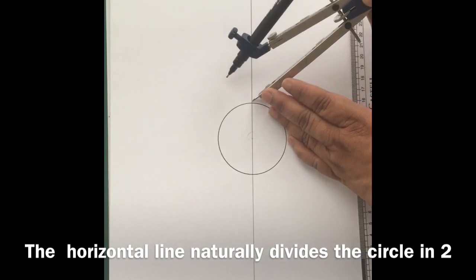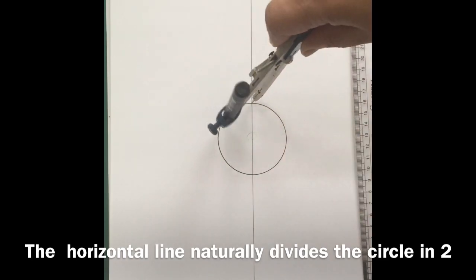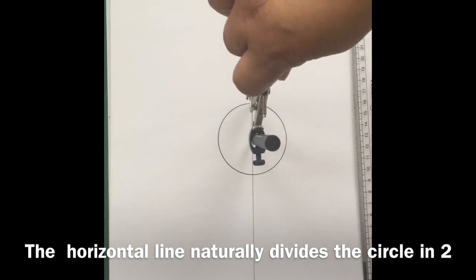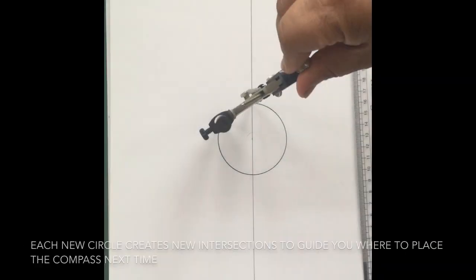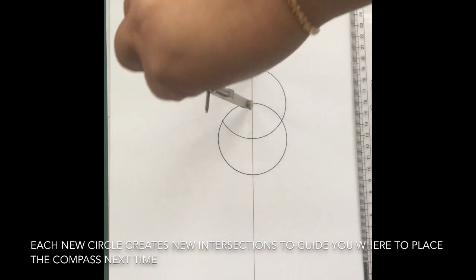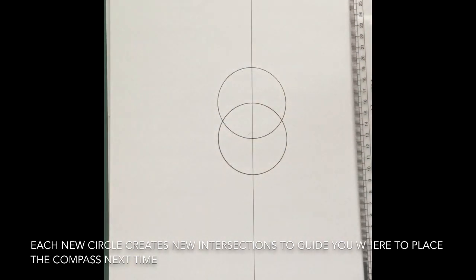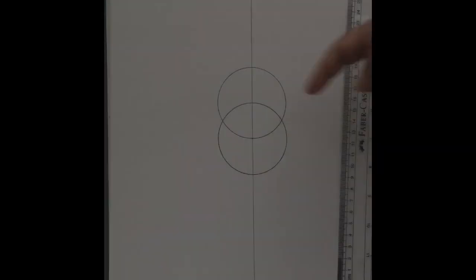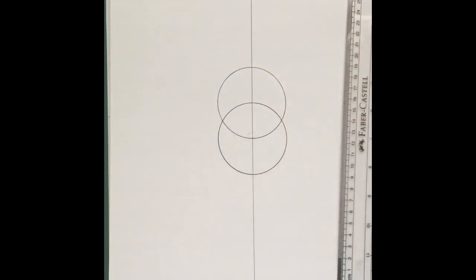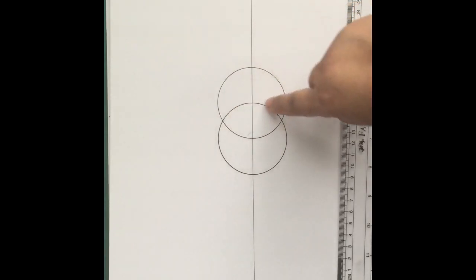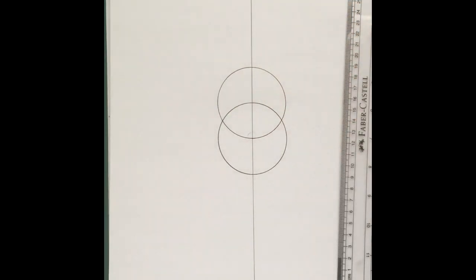So that's where I'm placing my compass point, and checking the radius, I'm going to draw my second circle. As you can see, two circles overlapping reveal a shape in between. This is called a vesica shape. We'll talk about it another day.